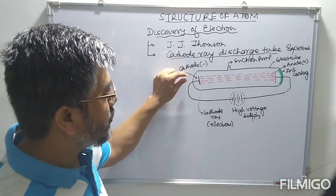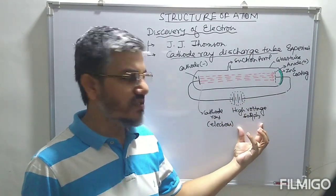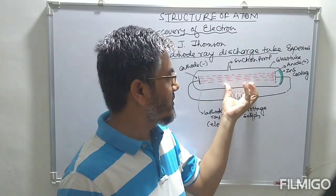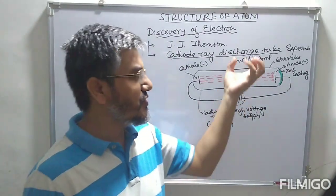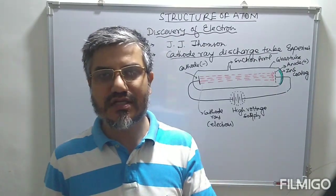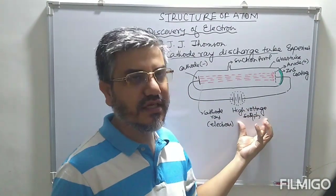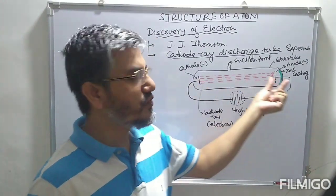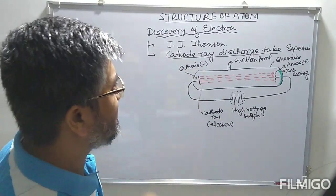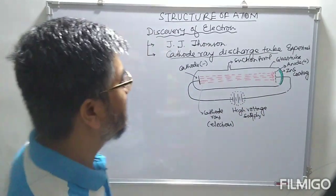These particles were observed emerging from the cathode and moving toward the anode when the pressure was low and high voltage was applied across the electrodes. If pressure is at normal levels, the particles are not observed. As pressure is decreased by pumping out the gas inside the tube, there are very few gas molecules present, and at this low pressure with high voltage, the stream emerges from cathode and moves toward the anode.